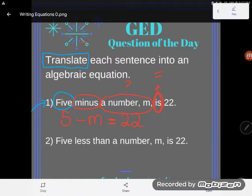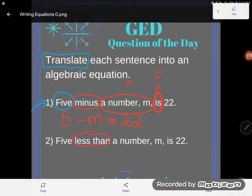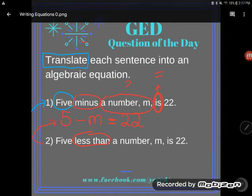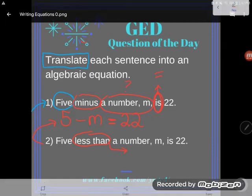Now I do want to make you aware of one little trick in this video even though we're kind of easing into the topic. And that is this idea of less than. A lot of students think less than means exactly the same as minus. And so they will translate this equation, five less than a number M is 22, exactly the same as number one. And you're wrong if you think that. So I need to talk to you a little bit about language with the phrase less than.